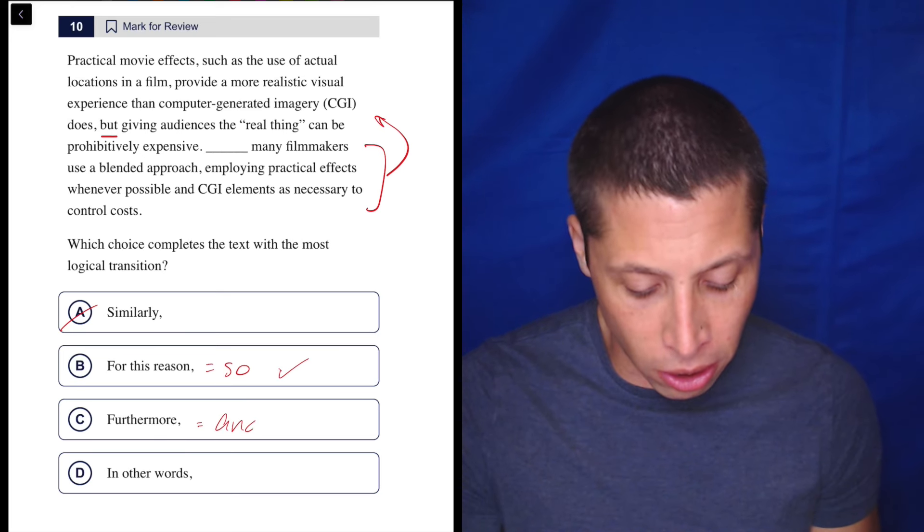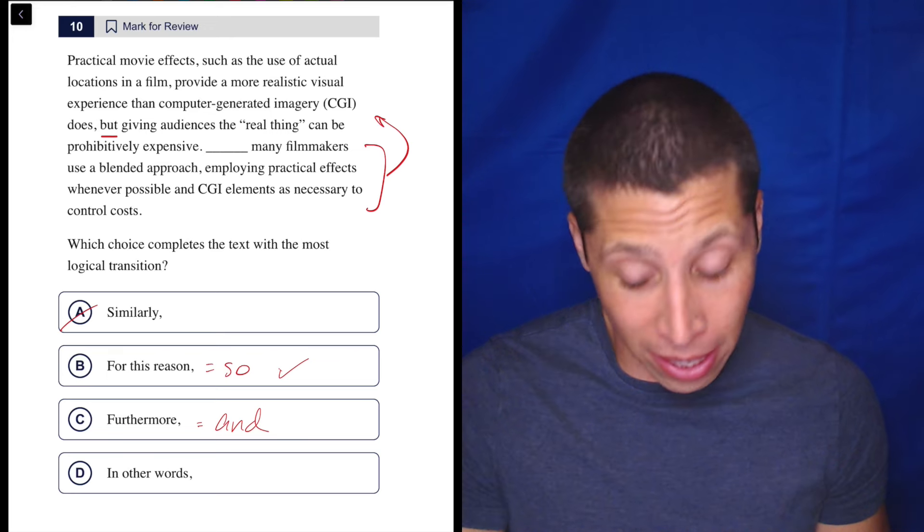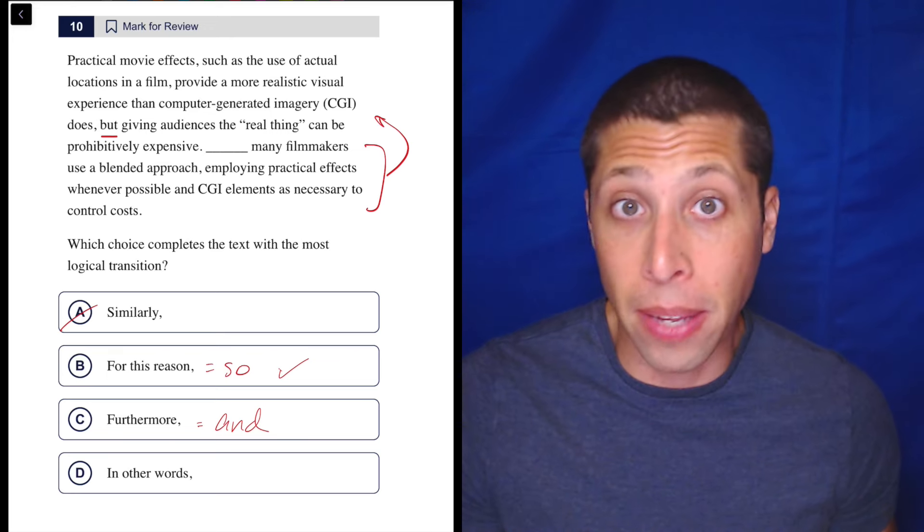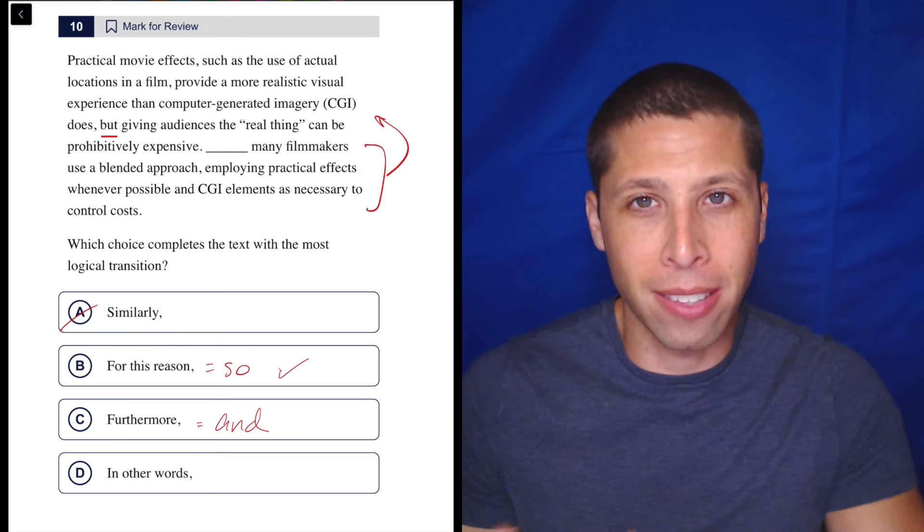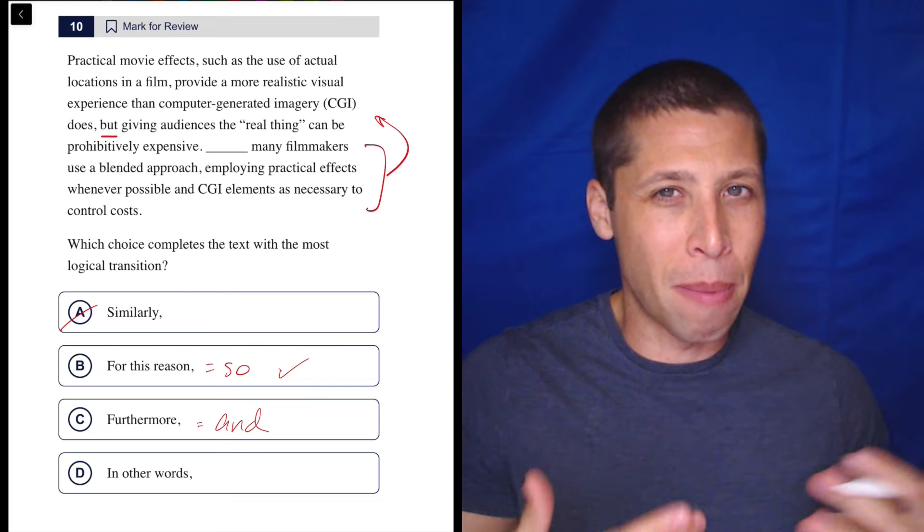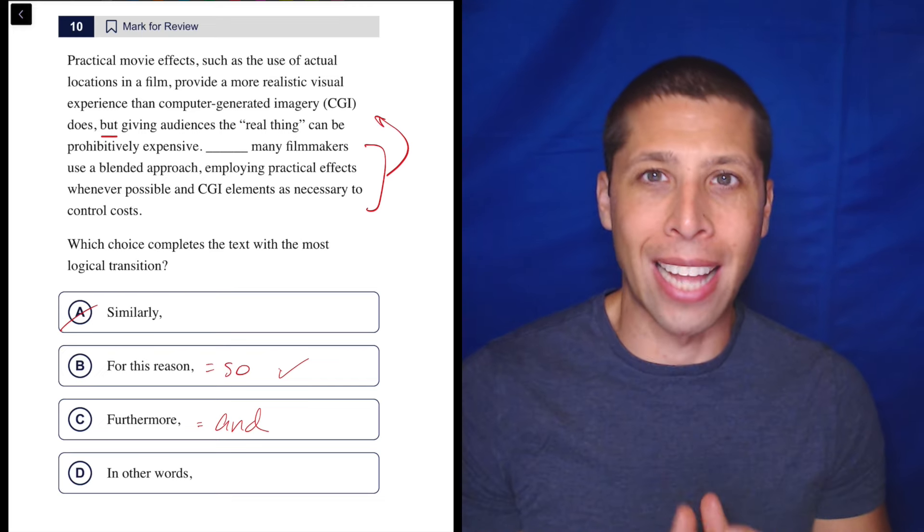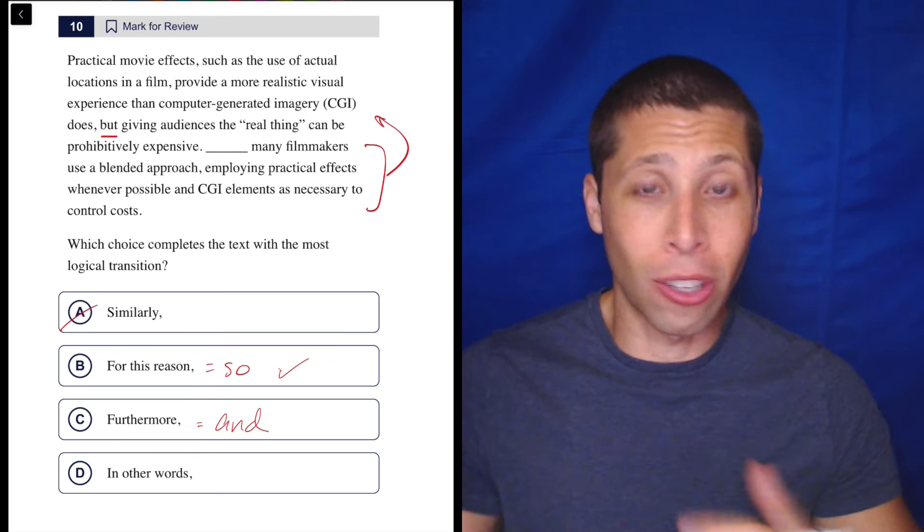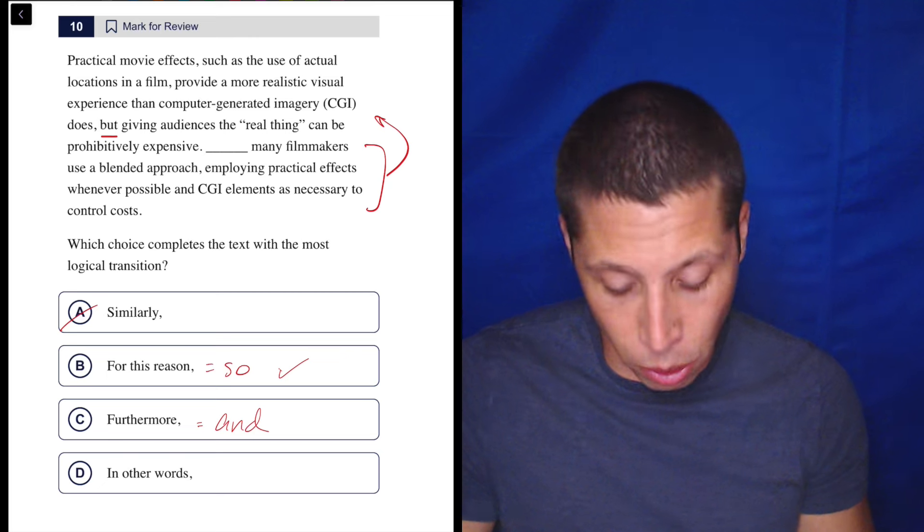Furthermore is basically a fancy version of and, so we're not really going to pick that unless everything else fails. So seems fine to me. In other words is saying the same thing in other words. It's going to be tempting because it feels like we're talking about practical effects and also about why they're expensive. Maybe in other words, we're going to blend things. But you've got to be very literal about that. They didn't say they were going to blend things in the first sentence. So the second sentence is a new idea. It's not saying the same thing in other words.